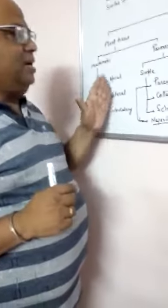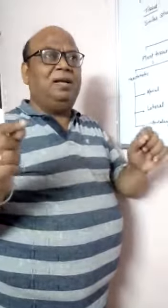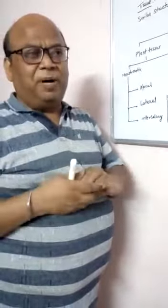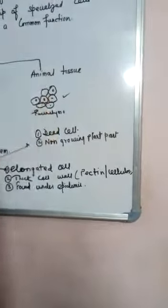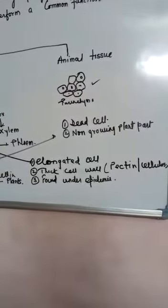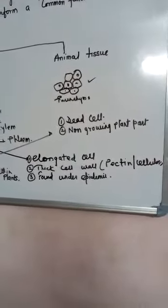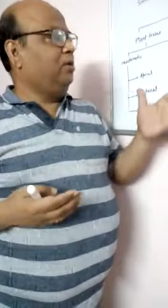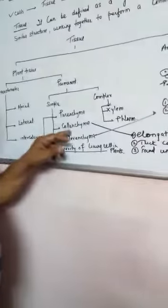Parenchyma is found in the majority of plants. These are living cells. As shown in the diagram, parenchyma cells have intercellular spaces and a soft cell wall. Naturally, these tissues are present mostly in the soft parts of the plant — they can be found in the leaf or any other soft part of the plant.